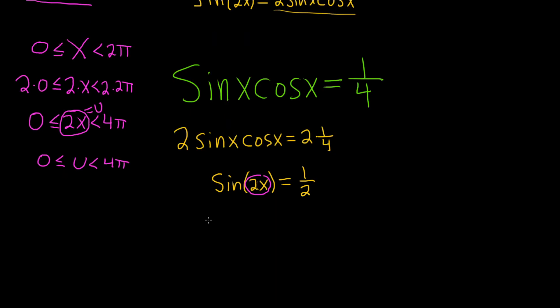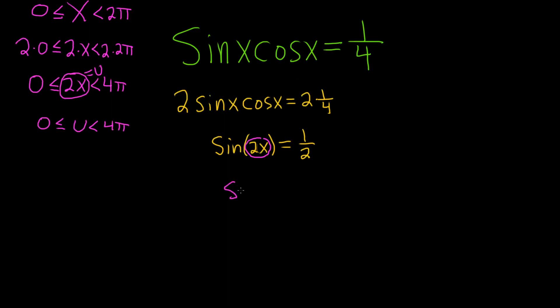So now, we can go back in here and then replace 2x with u. So sine of u is equal to 1 half. So we're looking for all of the values of u such that the sine of u is 1 half. So let's think. So the easiest angle we can use is u equals π over 6. That's from memory.